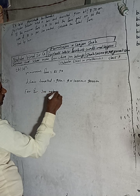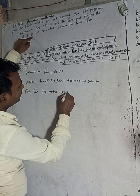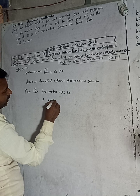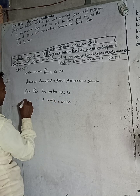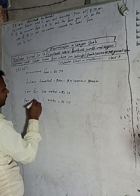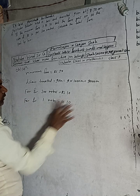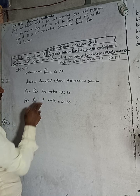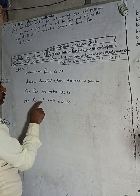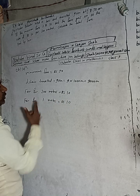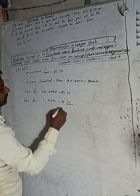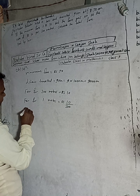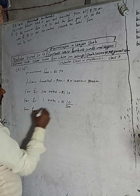By the unitary method, we find the fare for 1 meter: 1 meter equals Rs 10 divided by 200. Since the distance increases to 9,000 meters, we multiply. So for 9,000 meters, the fare equals Rs 10 divided by 200, multiplied by 9,000.